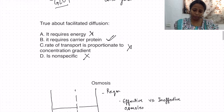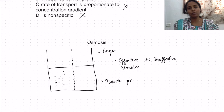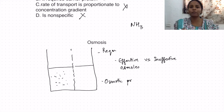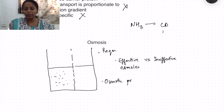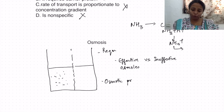Non-ionic diffusion occurs for substances that are lipid soluble in one form but not when in ionic form. An example is ammonia transport in the kidneys. Ammonia can cross various parts of the nephron freely, but once inside the collecting ducts, it binds with secreted hydrogen ions to form ammonium ion. The ammonium ion cannot cross the membrane and is excreted — this is non-ionic diffusion.